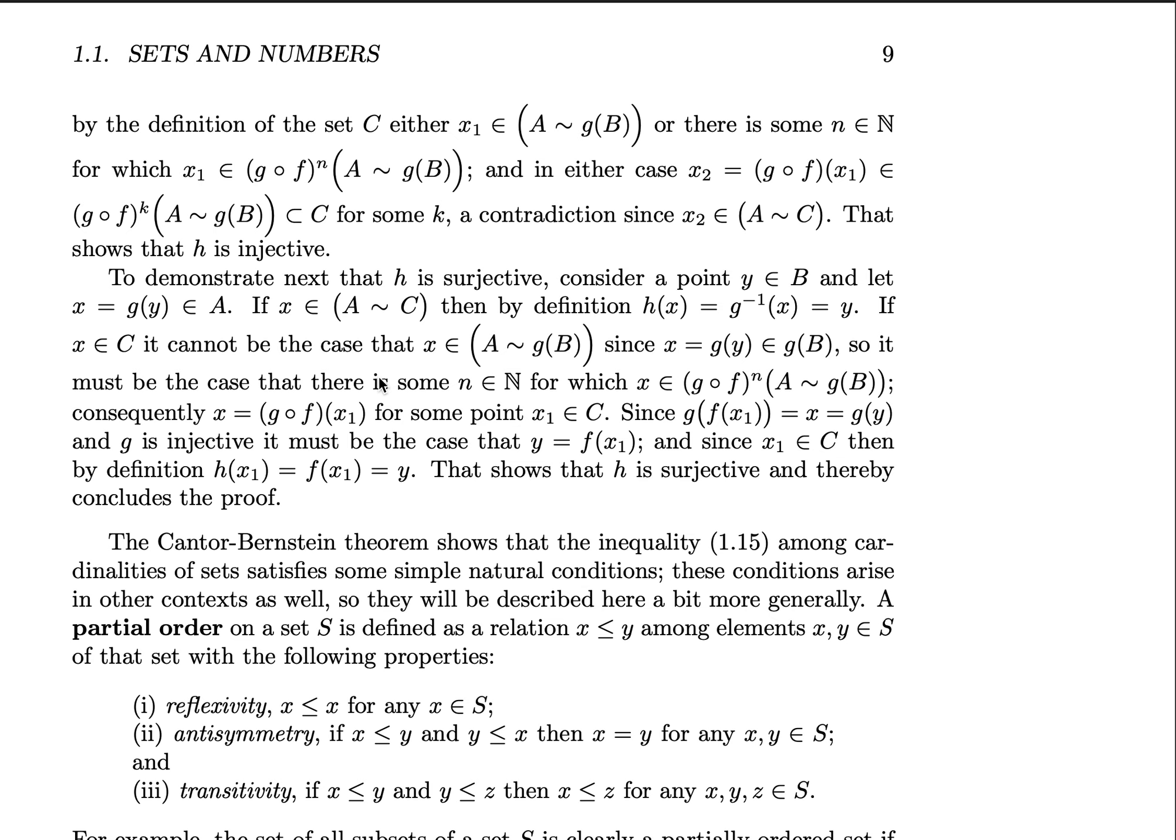With that very detailed proof out of the way, we will begin to use it to define a partial order on sets, and using natural numbers, and then we will consider some more of Cantor's theorems. Thank you.